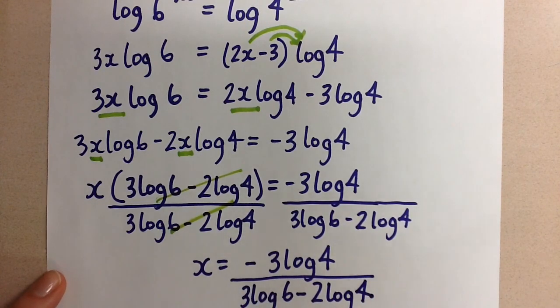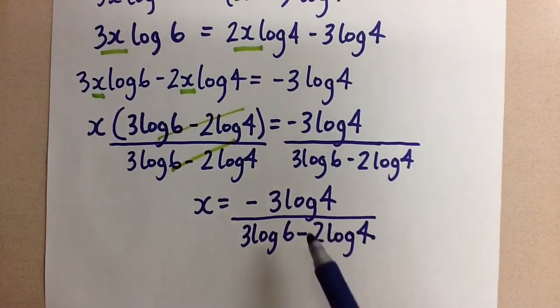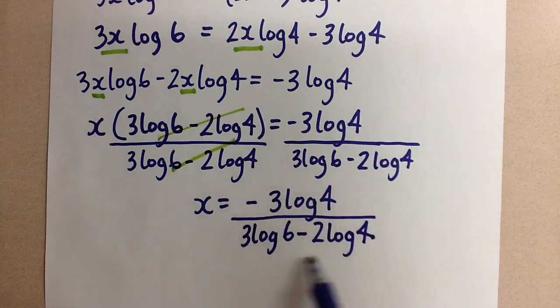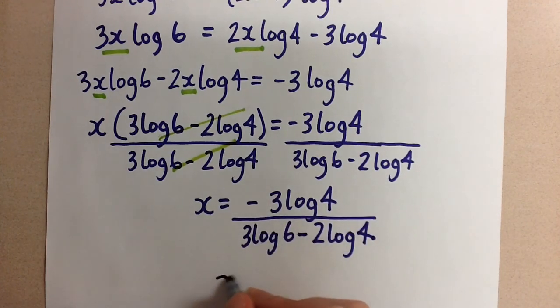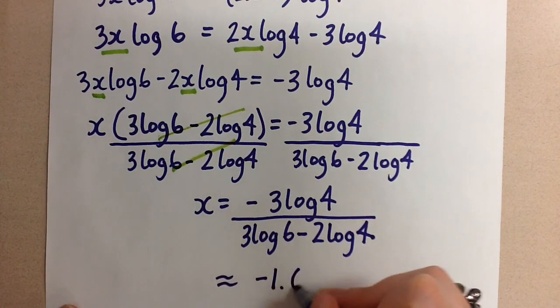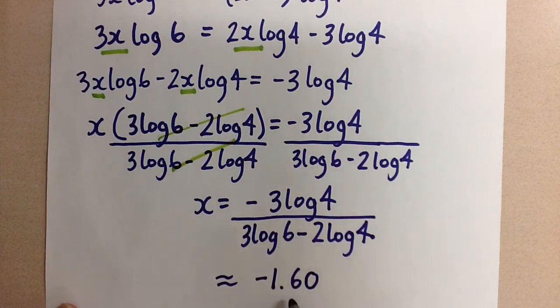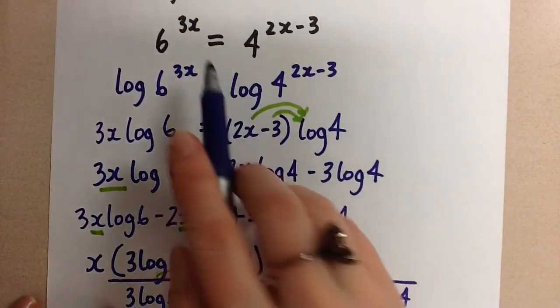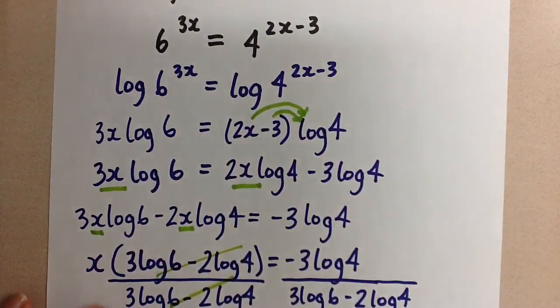This is just a number. So at this point you can get out your calculator and evaluate this. Just make sure you follow order of operations. And this is going to give us a value approximately equal to negative 1.60 if I round to decimal places. So that is the value of x that satisfies this exponential equation.